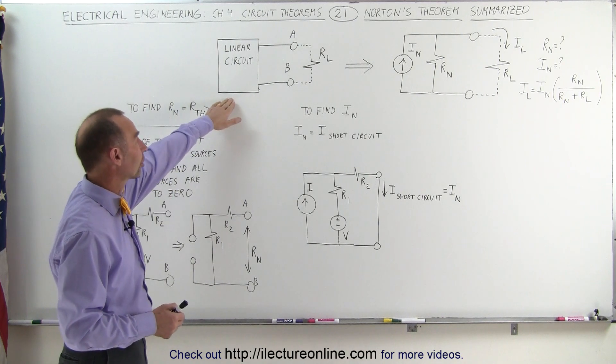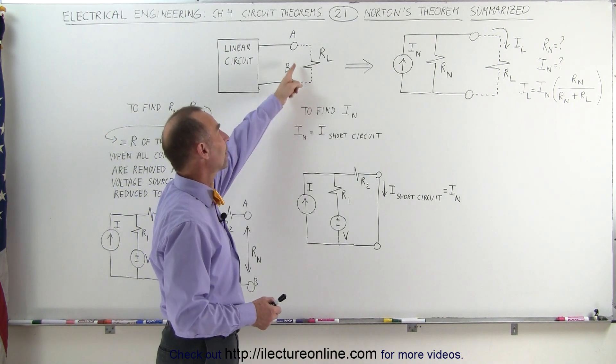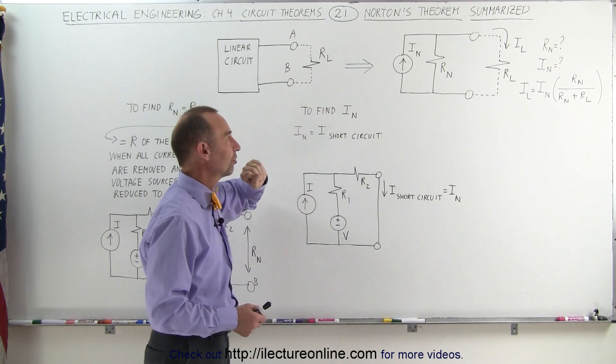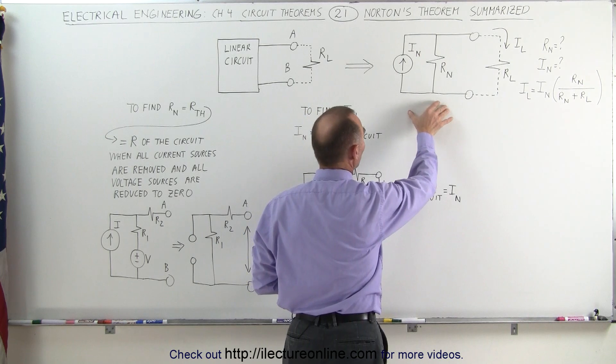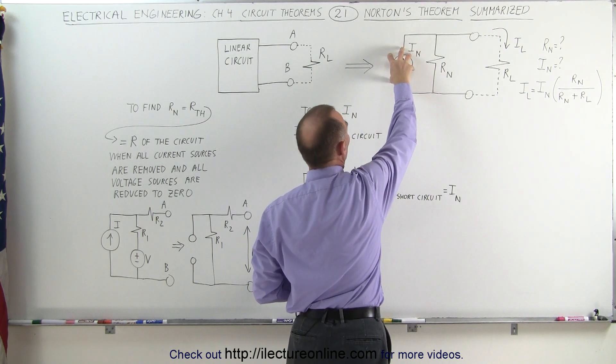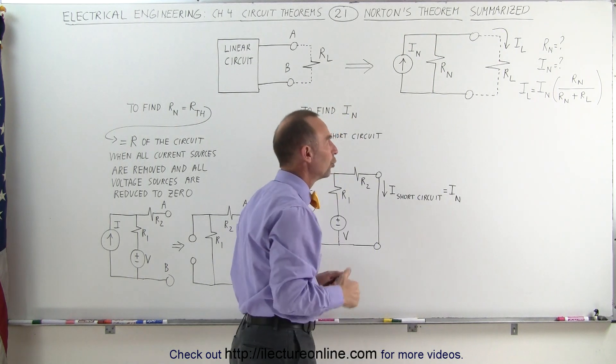Let's say we have a linear circuit and we connect the load resistor to the linear circuit and we're trying to find the current through the load resistor. We can do that by finding the Norton equivalent circuit, which contains a single current source and in parallel to the current source a resistor called the Norton resistor.